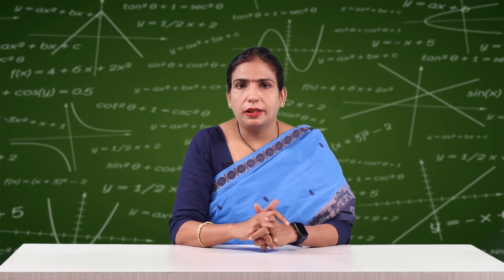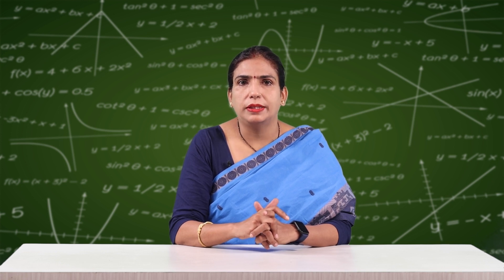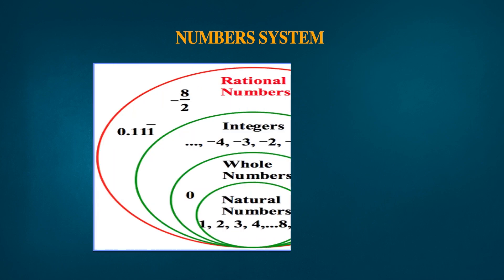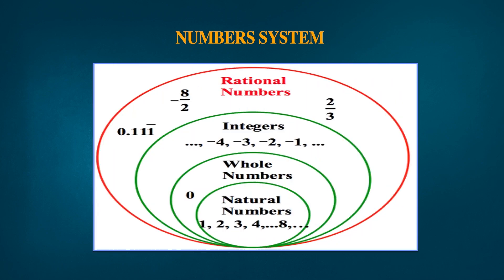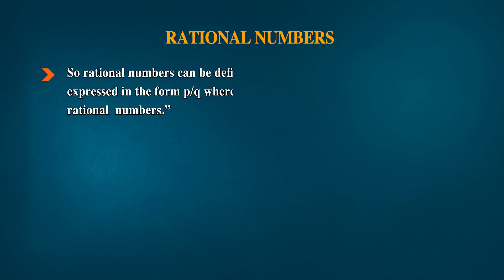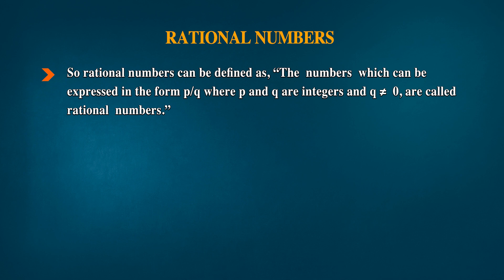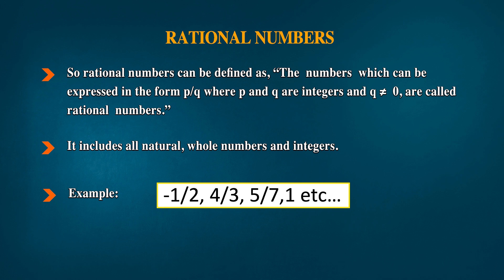This diagram explains the constitution of rational numbers. Rational numbers include all natural numbers, whole numbers, integers, and positive and negative fractions. A rational number can be defined as a number which can be expressed in the form of p/q, where p and q are integers and q is not equal to zero. Examples include -1/2, 4/3, 5/7, 1, 0, 2/7 — all come under the category of rational numbers.